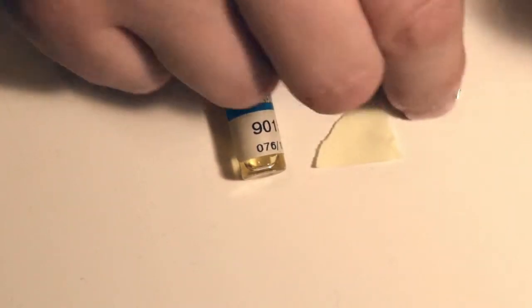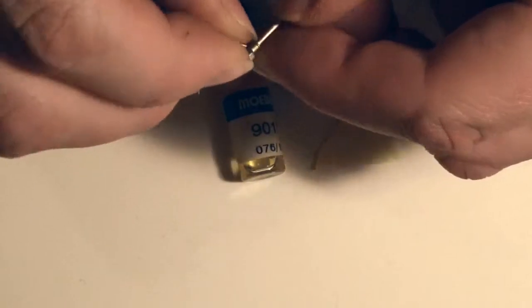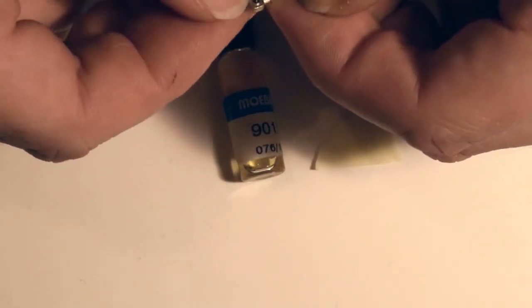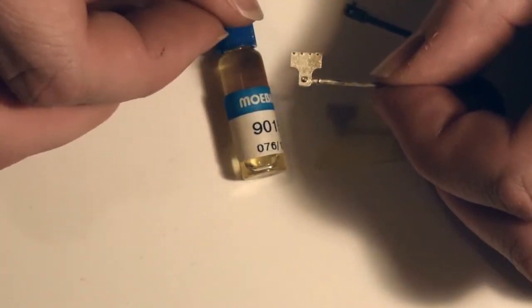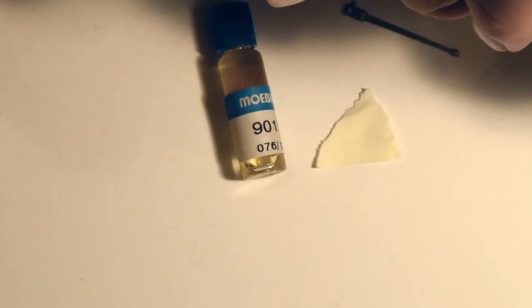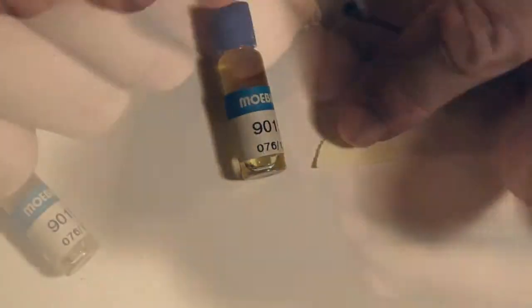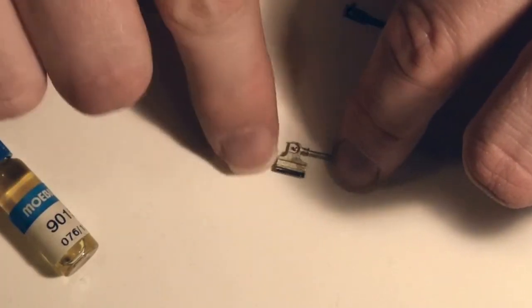The next job is to pop the rivet through the hole in the crosshead. So it's sticking out the back. Always rivet from the front to the back. Place it down, hopefully without the rivet dropping out the back.